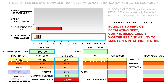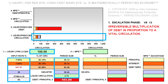So we again reduce the rate of usury from 10% to 7.5%. Note that again we drop out of the terminal phase, and again only marginally so. Moving on to year 14, we see we remain marginally solvent.